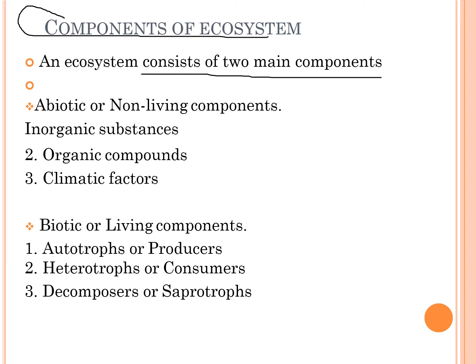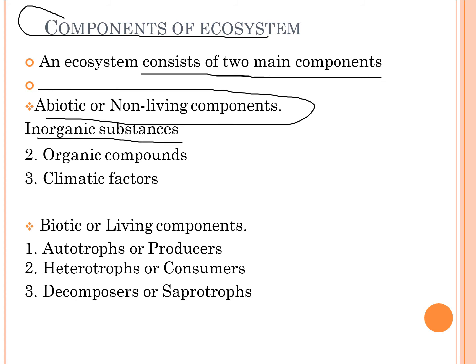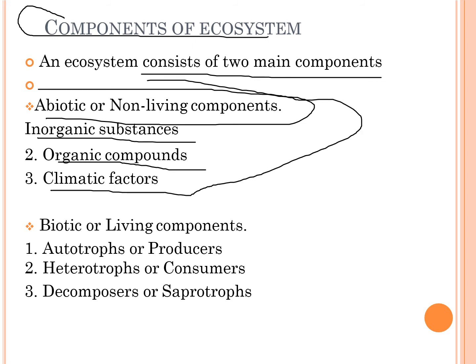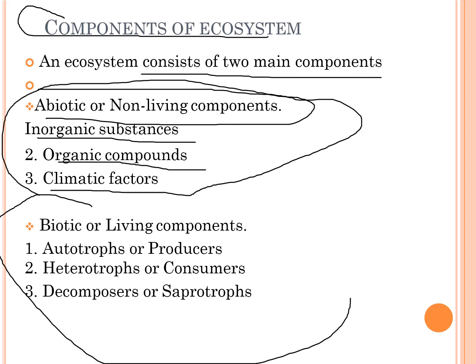Moving on, we have the components of ecosystems, which are two main types: abiotic and biotic. The abiotic or non-living components include inorganic substances, organic compounds, and climatic factors.